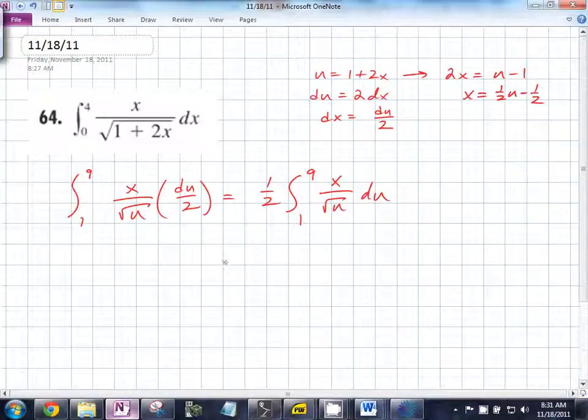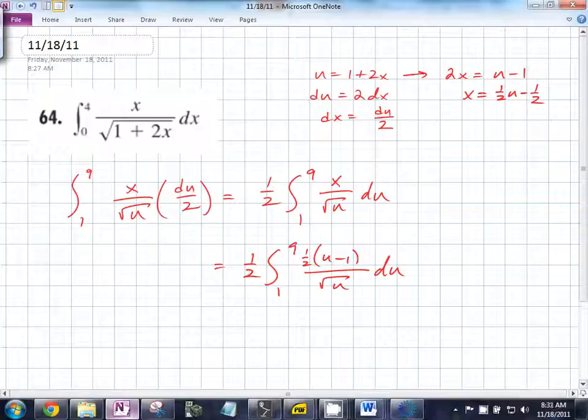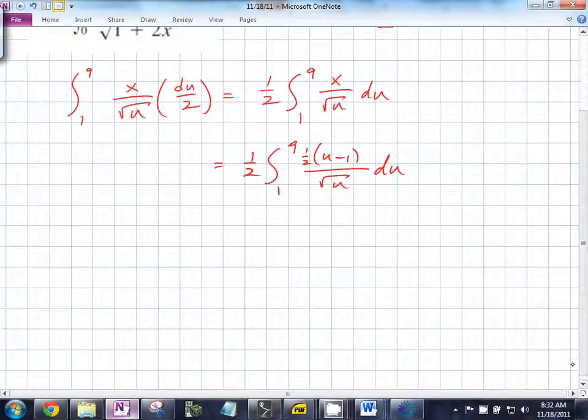So this is equal to 1 half of 1 to 9 of, and let's make it 1 half u minus 1 all over the square root of u du. What have we now gotten rid of? Remember step one of the other tips was you can substitute more than once? Totally, absolutely true. So what do you have to do at this point if you want to evaluate this integral? Simplify.